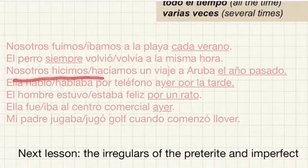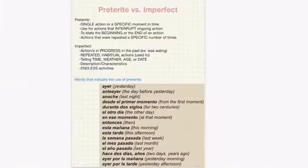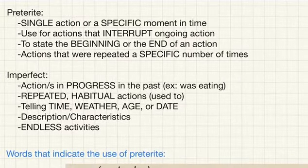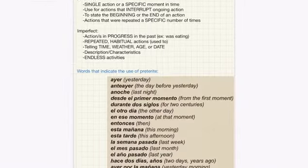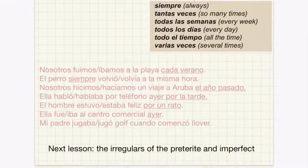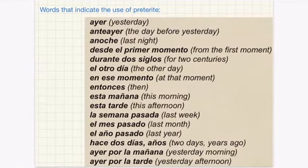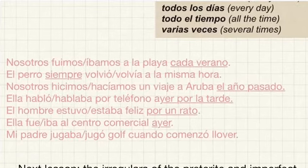Moving on: 'nosotros hicimos or hacíamos un viaje a Aruba el año pasado.' Preterite would be used for a specific moment in time. As you can see, it was 'el año pasado,' which is confirmed in the words that indicate the use of preterite. So we would use preterite — hicimos.